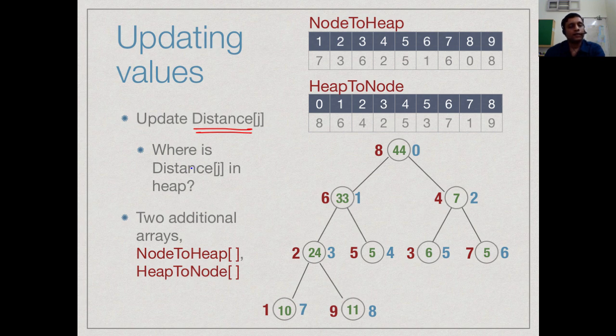We need this extra information to be kept separately. We will keep two new arrays pointing from the nodes which are 1 to n to the heap which is 0 to n minus 1 and vice versa from the heap which is 0 to n to the nodes.